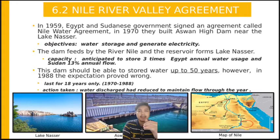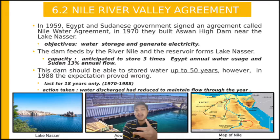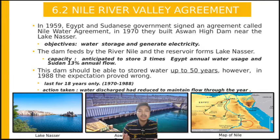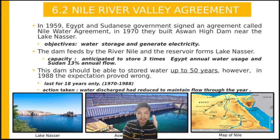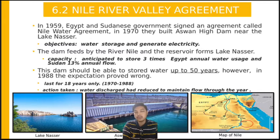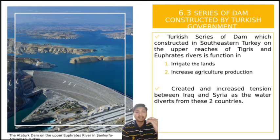In 1959, the governments of Egypt and Sudan reached a shared agreement called the Nile Water Agreement. In 1970, a dam was built near Lake Nasser, fed by the Nile River, for water storage and electricity generation. They calculated the dam could store water for 15 years; however, this was proven wrong as it only lasted from 1970 to 1988 — 18 years — after which they were forced to discharge water and reduce flow through the river.